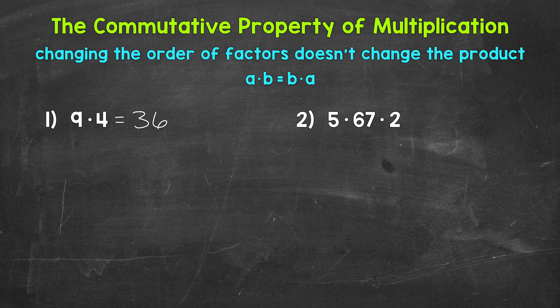The commutative property of multiplication states that we can change the order of those factors, and that will not change the product. 4 times 9 is 36 as well. And that's the commutative property of multiplication. 9 times 4 equals 36, and 4 times 9 equals 36.